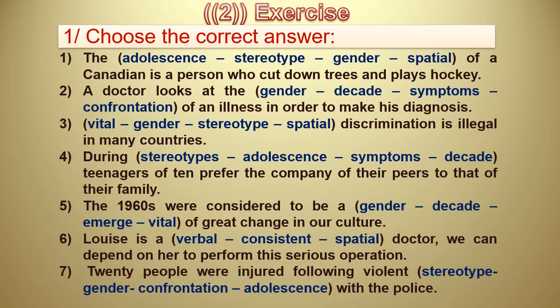The answer for number three is gender. Number four: during adolescence, teenagers prefer the company of their peers to that of their family — the answer is adolescence.